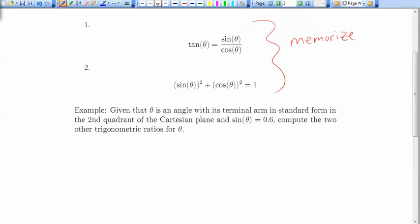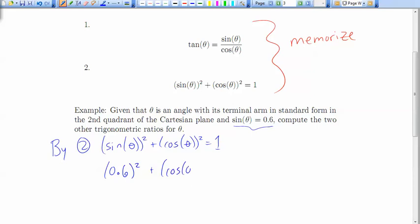So first of all, I could use the second one. So by 2, we know that for whatever this mystery angle is, sine of theta squared plus cos of theta squared will give me 1. And we know what sine of theta is, it's 0.6.